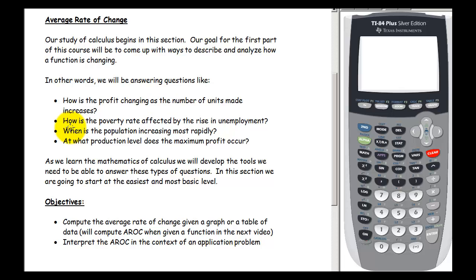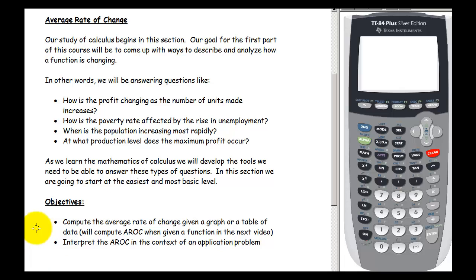Other questions we might ask include: how is the poverty rate affected by the rise in unemployment? When is the population increasing most rapidly? At what production level does the maximum profit occur? All of these questions can be answered using calculus. In this first section, we're going to start at the most basic level and look at the average rate of change. Our goals are to compute the average rate of change from a graph or table of data, and to interpret it in the context of an application problem.